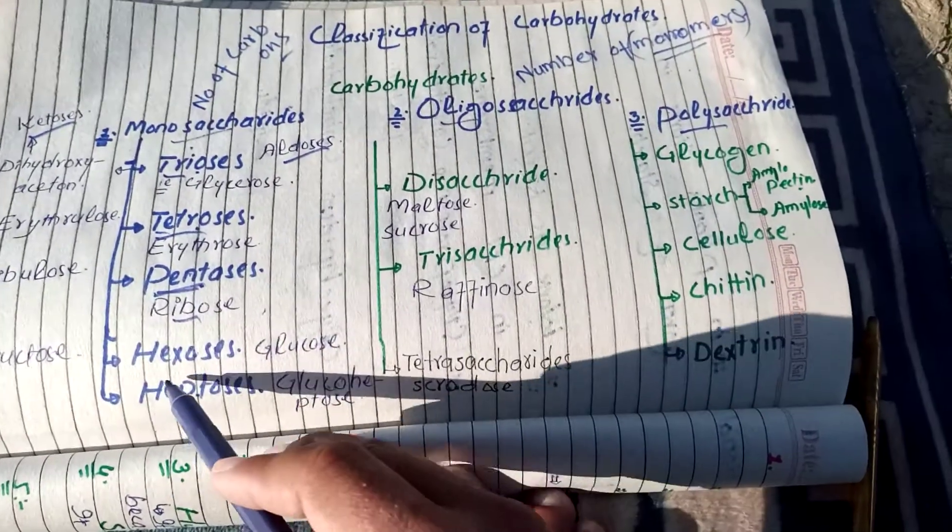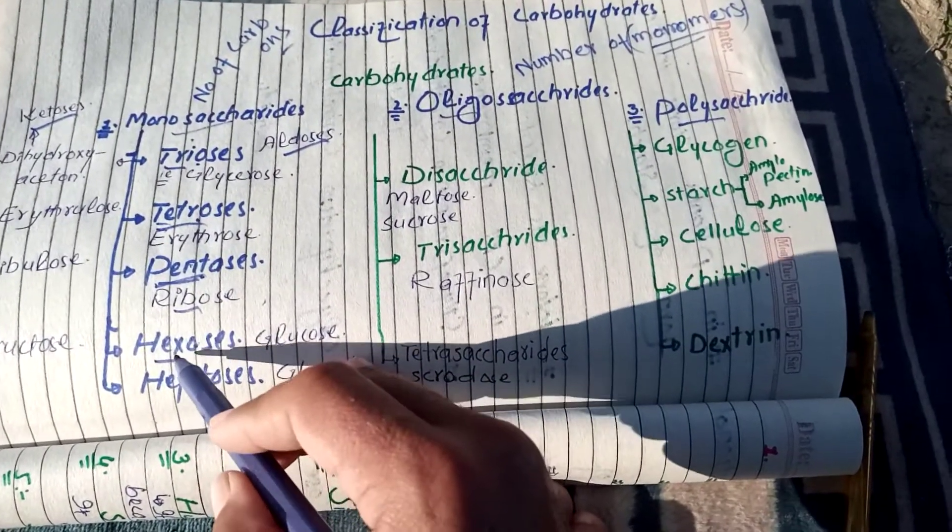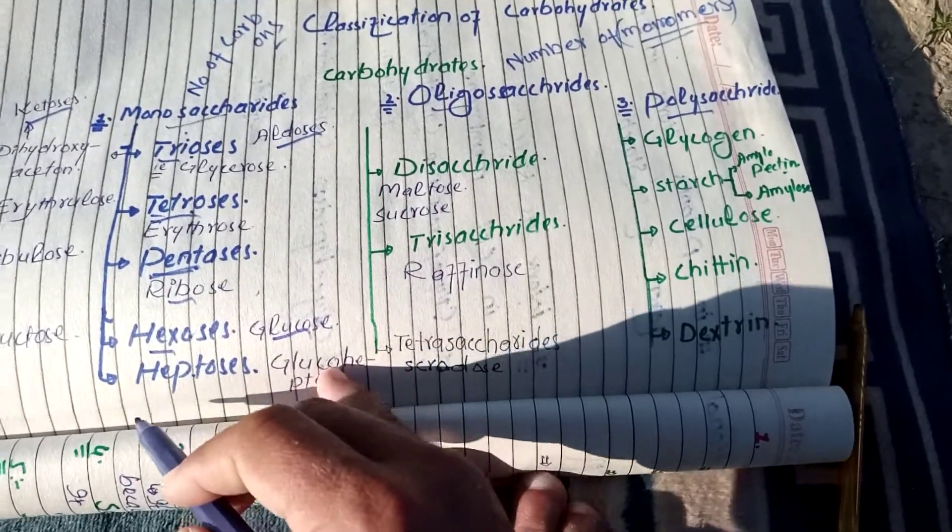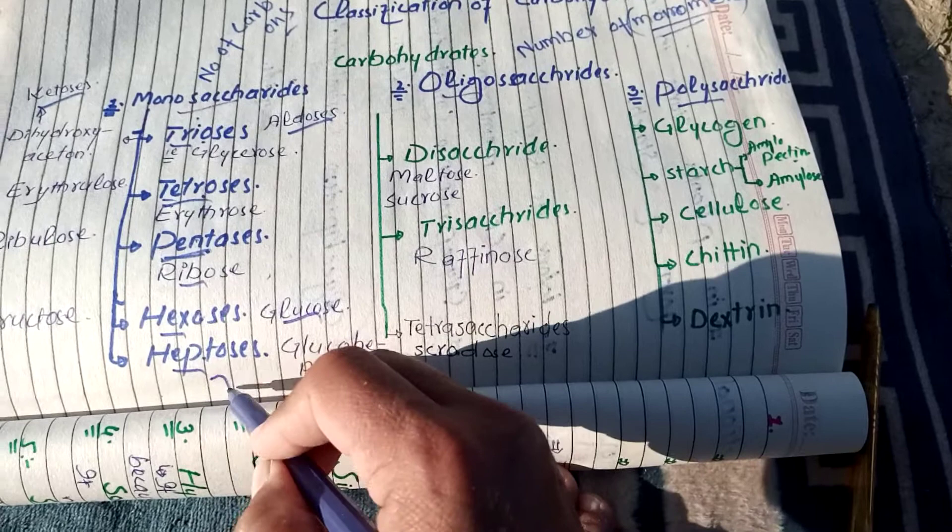For example, ribose. Hexose jis mein 6 carbon mojood ho. For example, glucose. Heptose jis mein 7 carbon mojood ho.